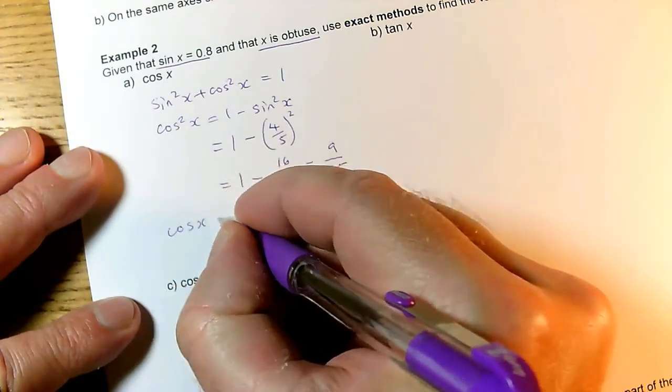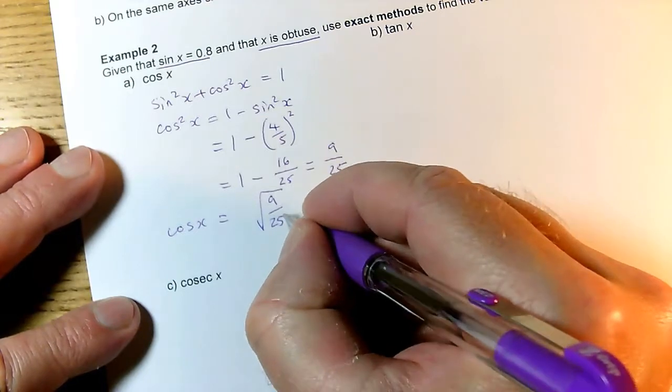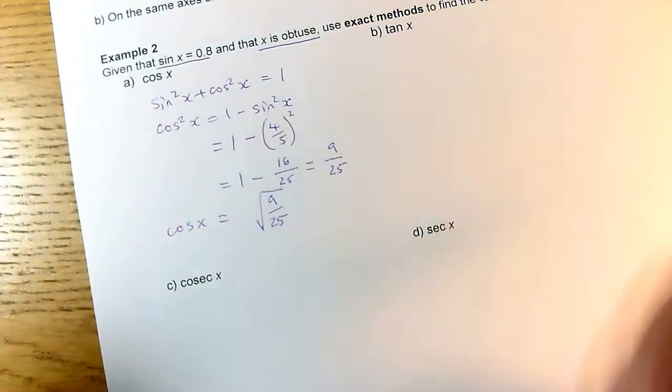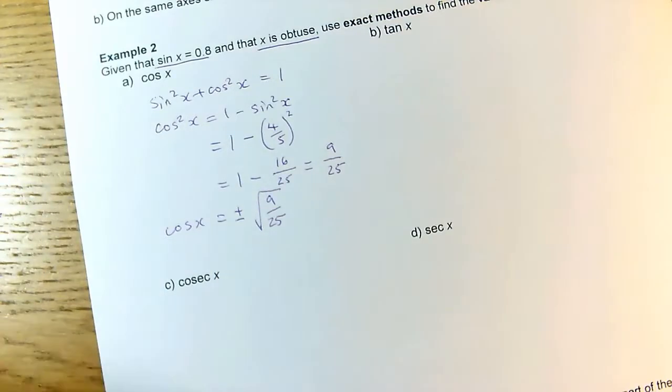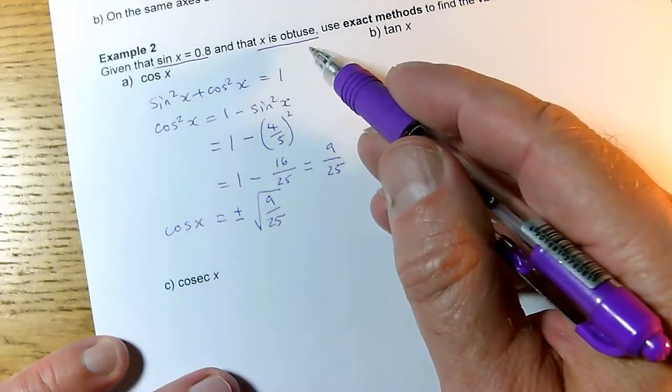So cos x is the square root of 9/25. But alarm bells should ring when we take a square root - there are two possible answers, plus or minus. To decide which I need, I have to use the other information given: x is obtuse. How does that help?